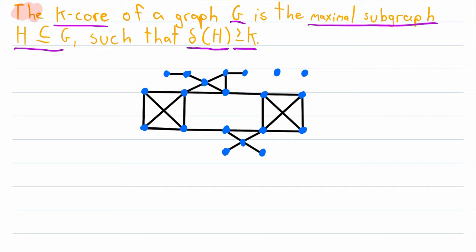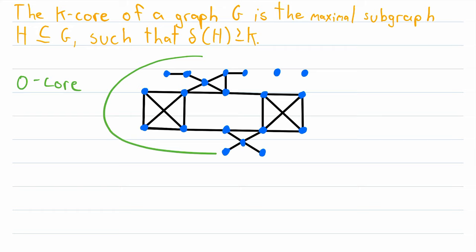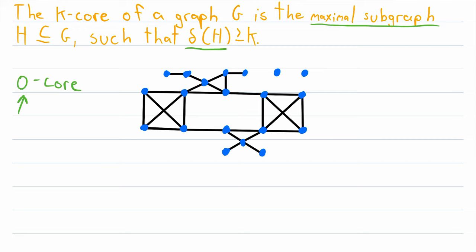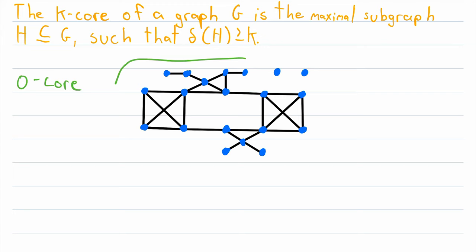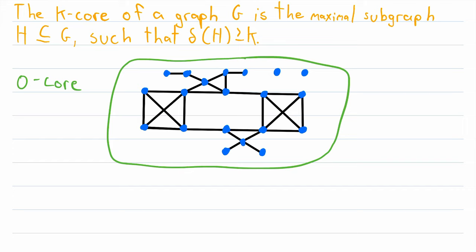To help clarify this definition, let's jump into some examples. For starters, let's look at the zero-core of this graph. By definition, the zero-core is the maximal subgraph such that every vertex in that subgraph has degree at least zero. We quickly realize that every vertex in every graph has a degree of at least zero, so the zero-core of this graph is actually the whole graph itself. We can keep every single one of these vertices and their adjoining edges in the zero-core — this is the entire graph.